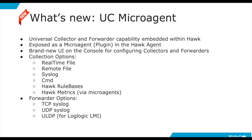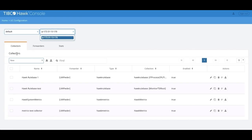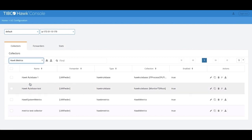The Universal Collector Microagent offered until HAWK 6.1.0 now has a brand new and improved avatar. You can now configure file, cmd, syslog, remote file, HAWK rule base, and HAWK metrics collectors, and ULDP, UDP, and TCP corridors from the centralized UC configuration screen on the HAWK console. You can select the agent and domain from the dropdown to configure collectors and corridors.